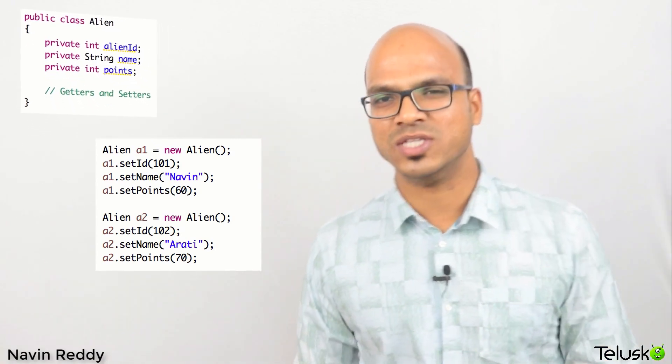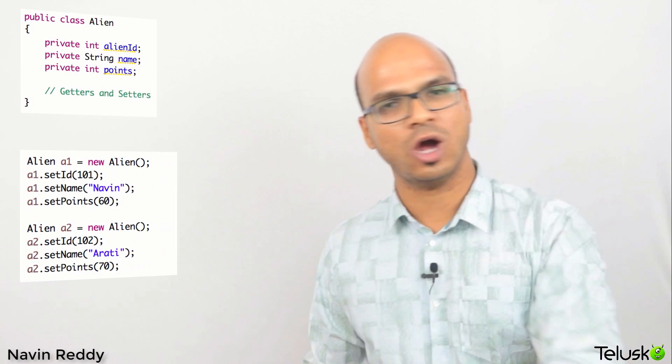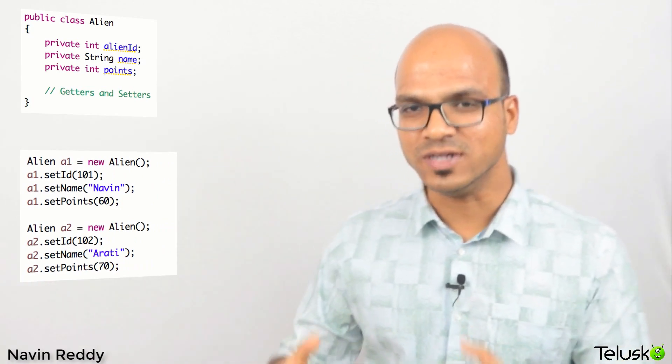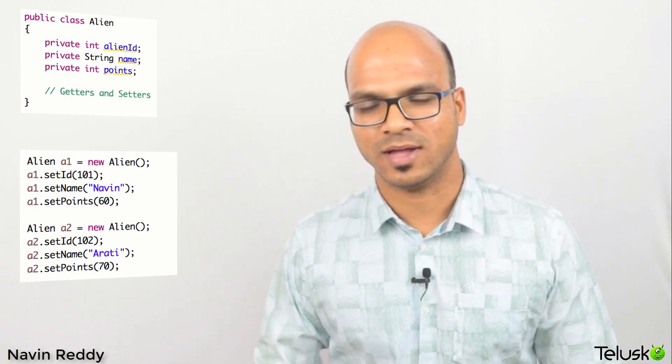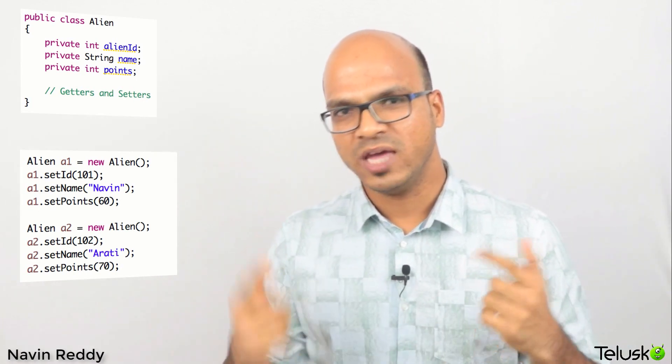The Alien class will have three variables: alien ID, name, and points. If I create the first alien object — alien ID 101, name Naveen, points 60 — that's one object. Now we have two or three objects. If you want to send this data to the client side, you have to convert it into XML or JSON. We will see how in the practical session, but I want to send this data in XML format. Before sending, we have to accept the request.